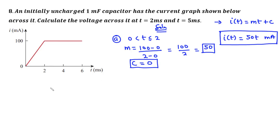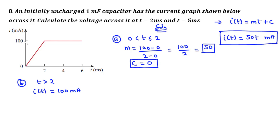Now for the second interval, that is where t is greater than two, we have a straight line passing through y equals 100. So we say the function i(t) = 100, also in milliamps. What this primarily means is that at every point on the t-axis, i(t) equals 100. These are the two functions we obtain for this graph.